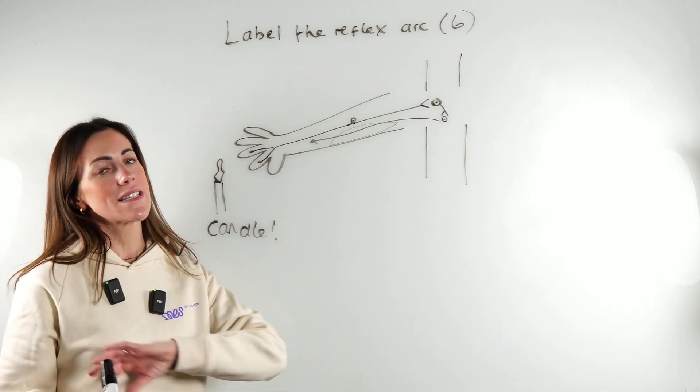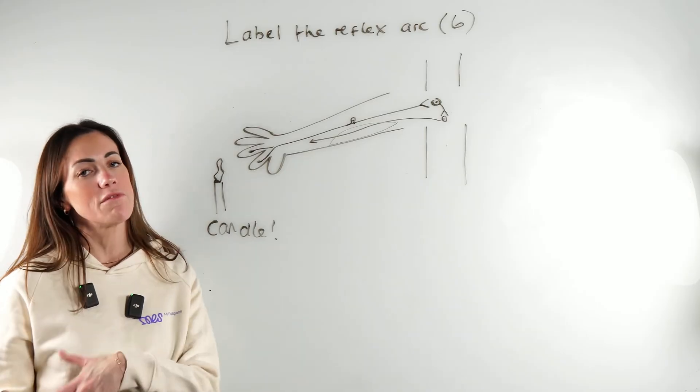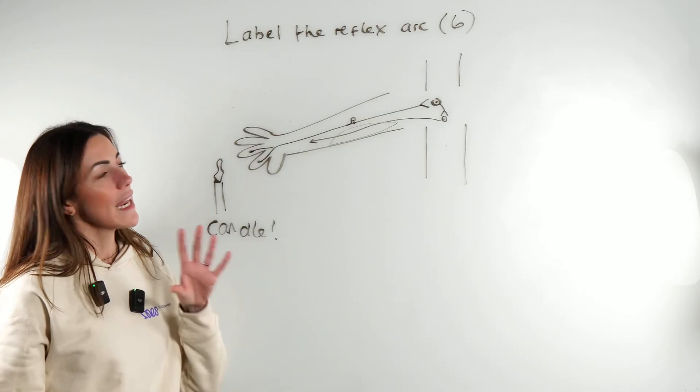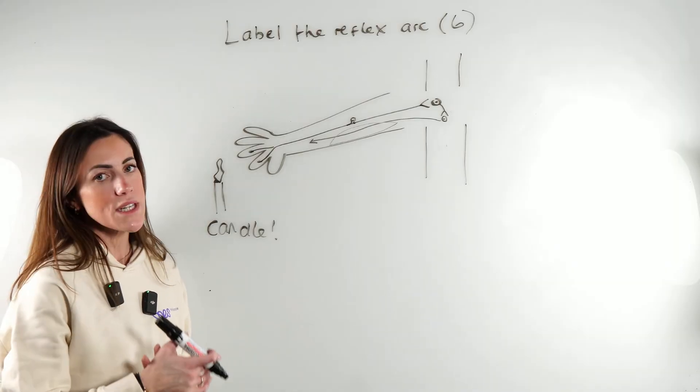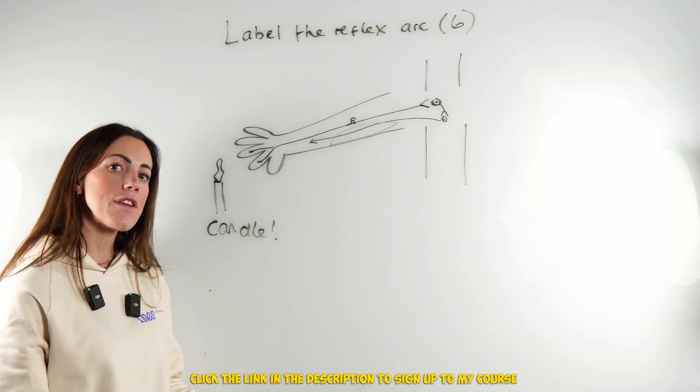So GCSE biologists, this question is for you if you've been studying your neurons and reflex actions. Hopefully you'll find this useful. We're going to label this reflex arc. I've made it worth six marks because we have to label absolutely everything.